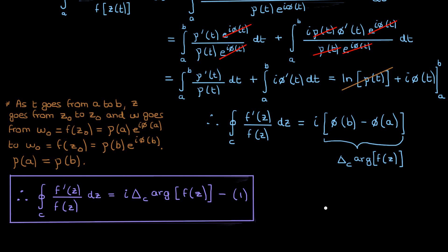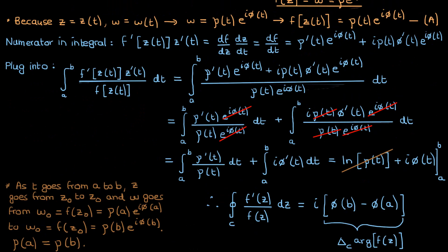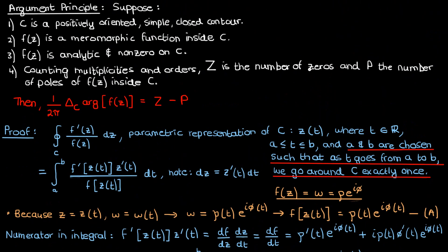So in conclusion, the integral over the closed curve C of f prime of z over f of z equals i times the change with respect to the contour C of the argument of f of z. I'll call this equation 1. Now the integral on the left-hand side of equation 1 can be evaluated using a second method.